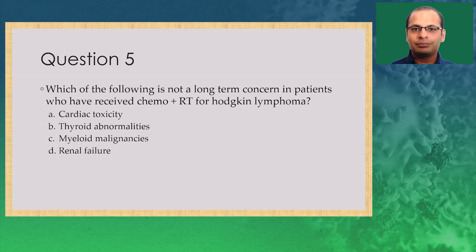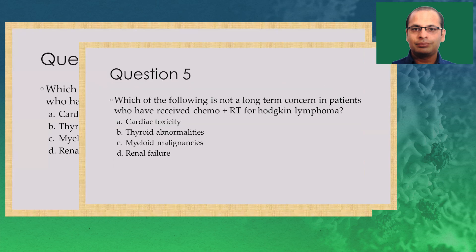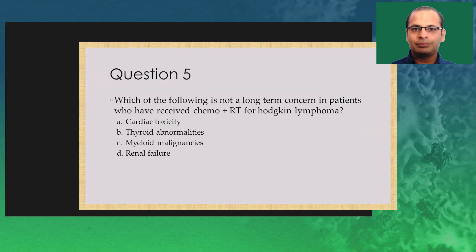Question 5: Which of the following is NOT a long-term concern in patients who have received chemotherapy and radiation for Hodgkin lymphoma? Cardiac toxicity, thyroid abnormalities, myeloid malignancy, or chronic renal failure. The correct answer is renal failure. Cardiac toxicity and myeloid malignancies can be seen because of anthracycline or etoposide use; thyroid abnormalities because of radiation. Renal failure has not been characteristically described as a chronic complication of Hodgkin lymphoma treatment.